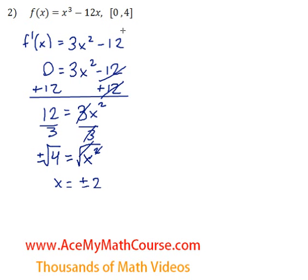Now we're only interested in critical numbers between 0 and 4, so we're going to ignore the negative 2. Let's calculate f of 2 because that's a critical number.